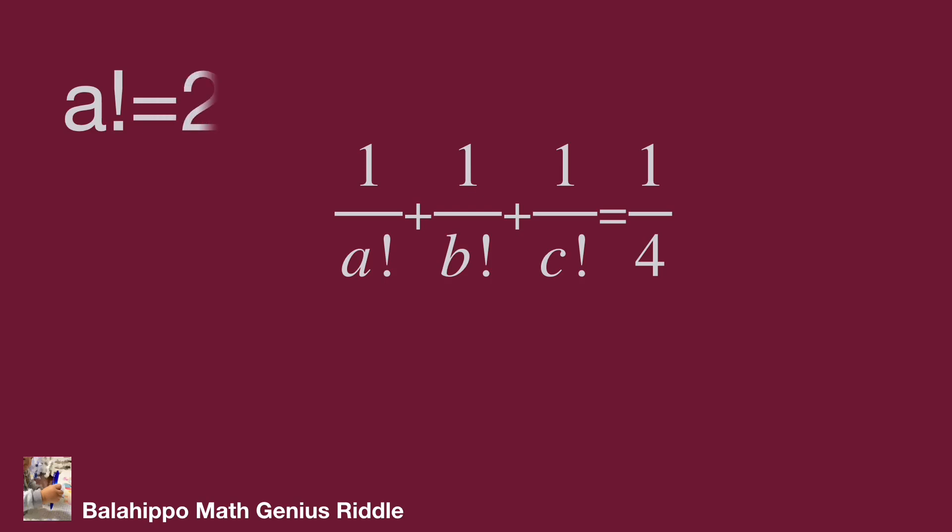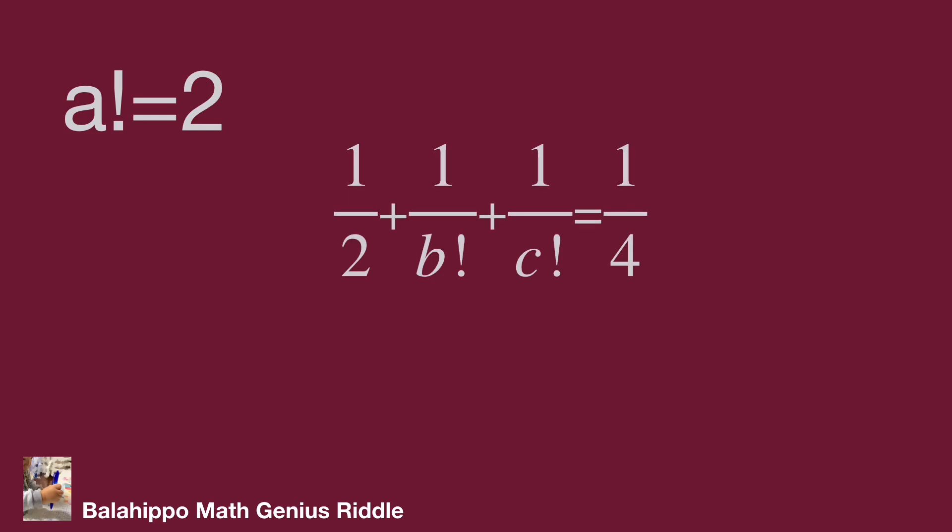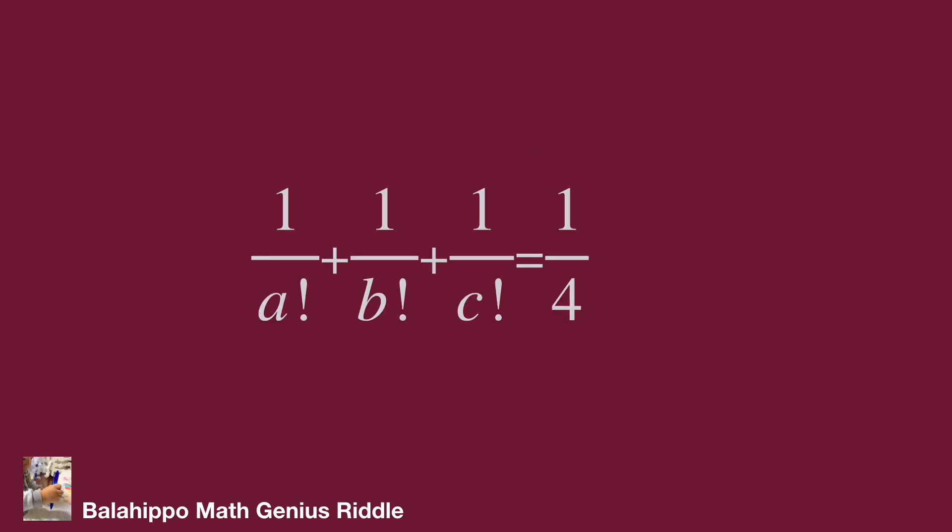When A factorial equals 2, substituting A factorial by 2 gives 1 over 2 plus 1 over B factorial plus 1 over C factorial equals 1 over 4. Again, 1 over 2 is larger than 1 over 4, so 1 over B factorial plus 1 over C factorial would be negative. Therefore, A factorial equals 2 is not the answer.